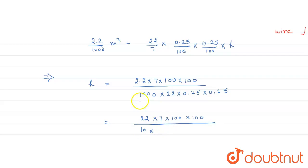Upon 1000 multiplied by 22, multiplied by 25 upon 100, multiplied by 25 upon 100.